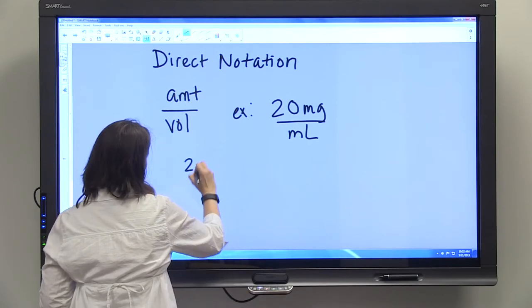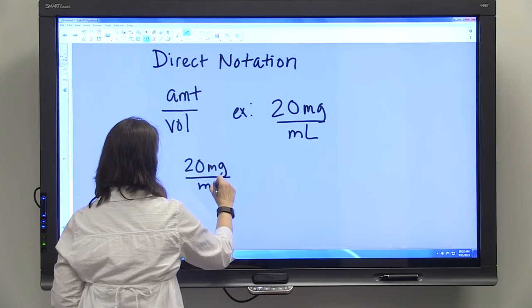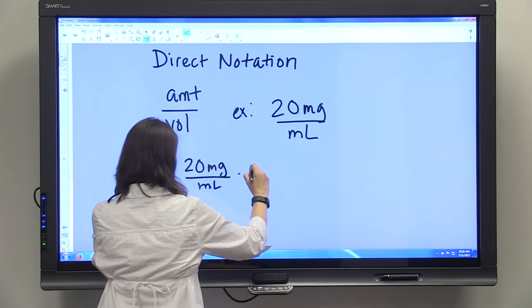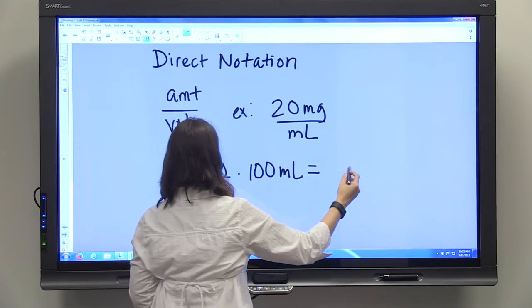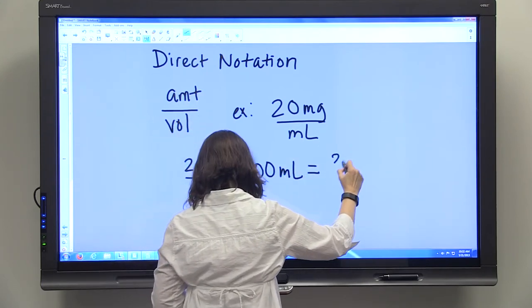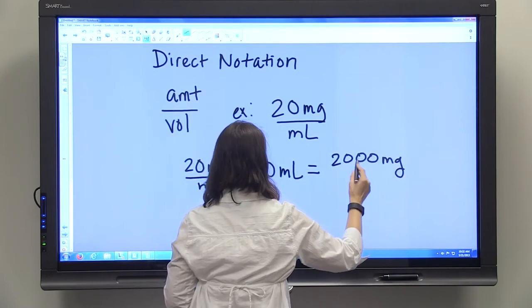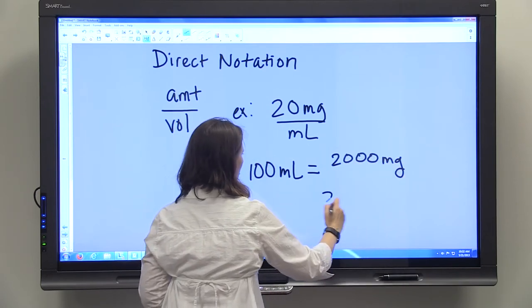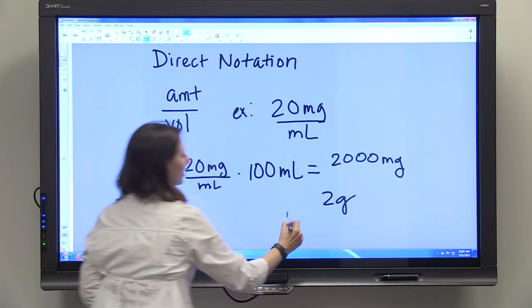you're going to multiply the concentration by the final volume. Then you'll know how much to add. So it's 2000 milligrams, but 2000 milligrams is 2 grams, and then you would bring to volume 100 ml's.